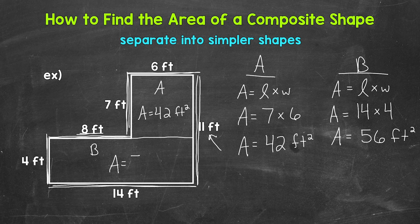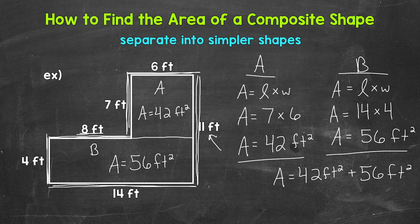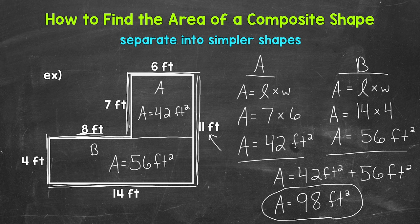Now we have all of the information we need to find the total area of the composite shape. We need to add A — 42 square feet — plus B — 56 square feet. So the total area: 42 square feet plus 56 square feet. 42 plus 56 gives us 98 square feet, and that's our final answer — the total area of that composite shape.